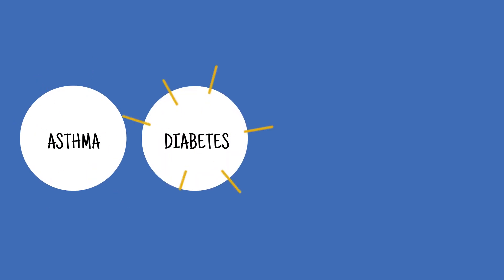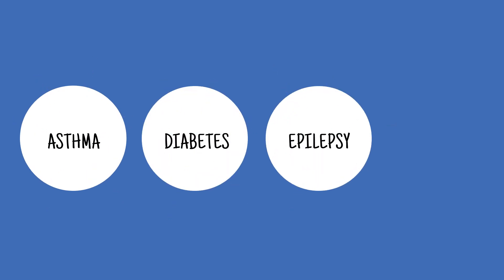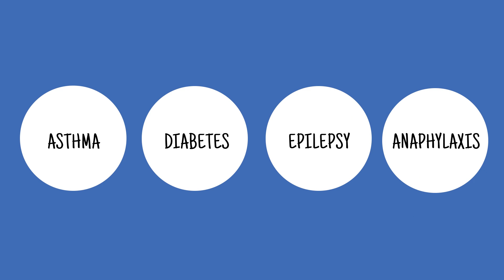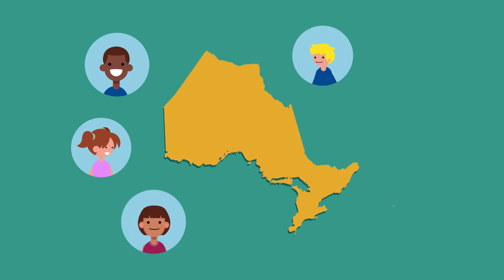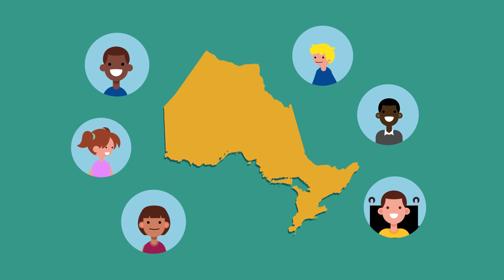All school boards in Ontario are expected to develop and maintain a policy or policies to support students with asthma, diabetes, epilepsy, and those who are at risk for anaphylaxis, which is the most serious type of allergic reaction. This is outlined in PPM 161, which is a Ministry of Education policy to support students with one or more of these conditions.